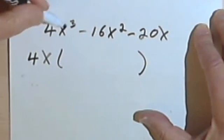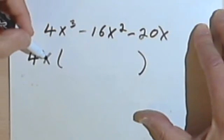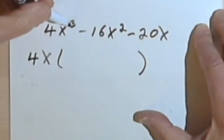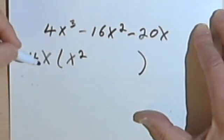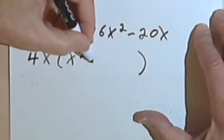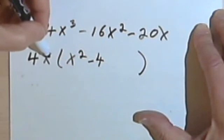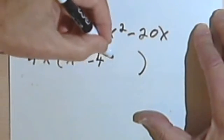4x divided into 4x to the third, well 4 into 4 will give me a 1, and x divided into x to the third will give me an x squared. 4 divided into negative 16 will give me a negative 4, and x divided into x squared will give me an x.